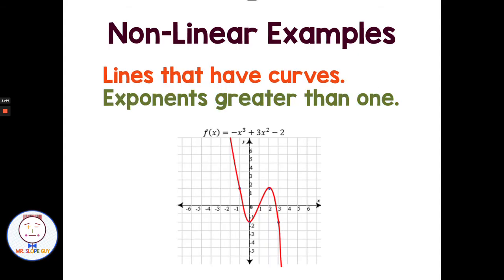Anything that has a curve on it, like here we have a polynomial with a degree of three, it's crossing back and forth over the x-axis three different times. We see an exponent of three, that is not going to be linear. That has curves in it. So non-linear.